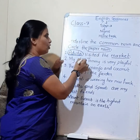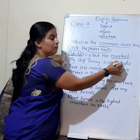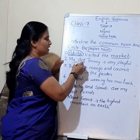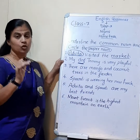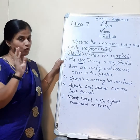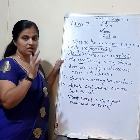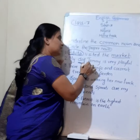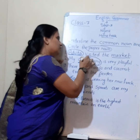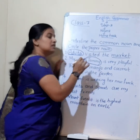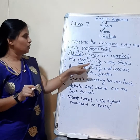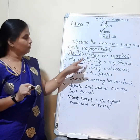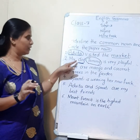Second example: 'My dog Tommy is very playful.' The word 'dog' is a common noun because it is not specified to a particular dog. But 'Tommy' is a specified name, so Tommy is a proper noun. This dog is a common noun and Tommy is a proper noun.